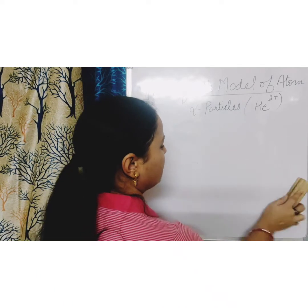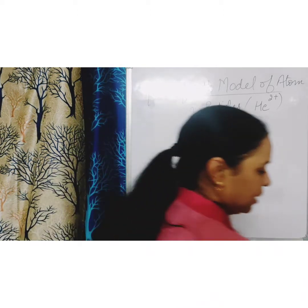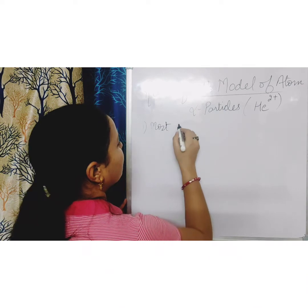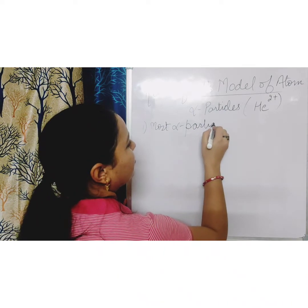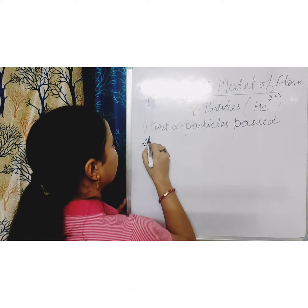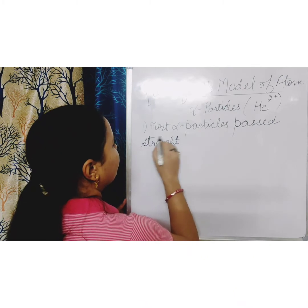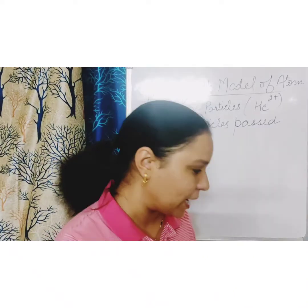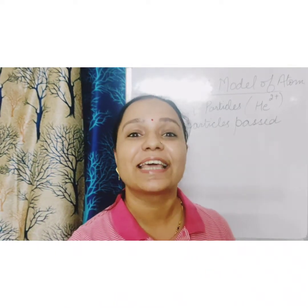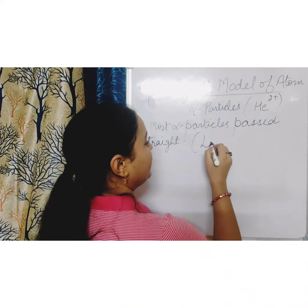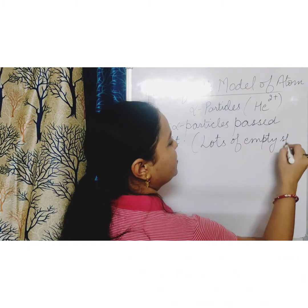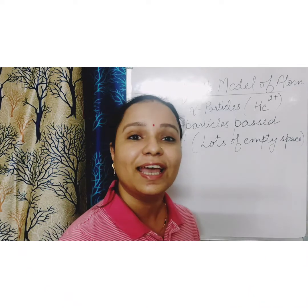Now let's discuss the inferences of his experiment. Inference number one: most alpha particles passed straight. That means most of the space inside the atom is empty — it inferred lots of empty space within the atom.